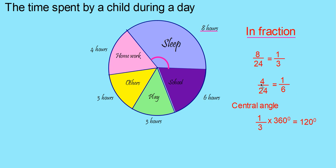How will you find out the central angle for homework? The fraction is 1 by 6, so you multiply 1 by 6 into 360 to get the corresponding central angle. Now you know how to convert information into fractions and how to find the central angle.